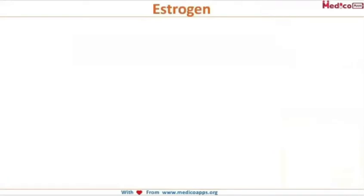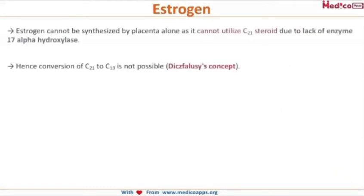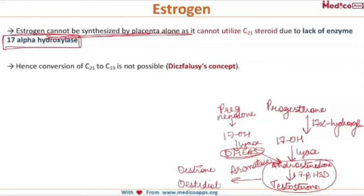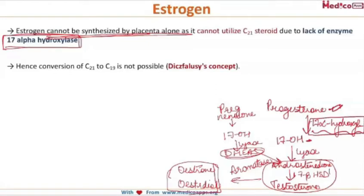The estrogen, the second hormone produced by the placenta — one important thing to know is that it cannot be synthesized alone by the placenta, as it lacks the enzyme 17-alpha hydroxylase. By knowledge of biochemistry, progesterone is converted into 17-hydroxy progesterone by this enzyme, and further in this cycle estrogens (estrone and estradiol) are produced. Since the placenta lacks 17-alpha hydroxylase, this entire cycle is interrupted and it cannot produce estrogen on its own.